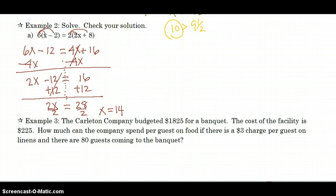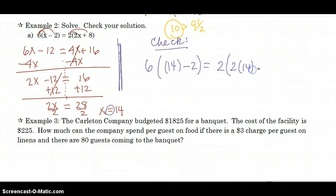At least I think it does. Let's check and see if we agree that x equals 14. So draw a line here. Over here is where we're going to do our check on this side. So I'm going to say in place of x, let's plug in 14 because it's an equation. 14 minus 2 equals 2 times 2 times 14 plus 8. So here we go. 6 times 12 equals 2 times 14 is 28 plus 8.